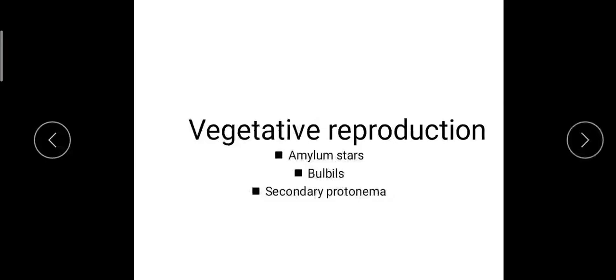Vegetative reproduction takes place by three means. First is by amylam stars. Amylam stars are vegetative cells — star-shaped cells called amylam stars. They develop from the lower nodes and have a rich amount of reserve food materials. When they detach from the parent cell, they develop into a new plant.